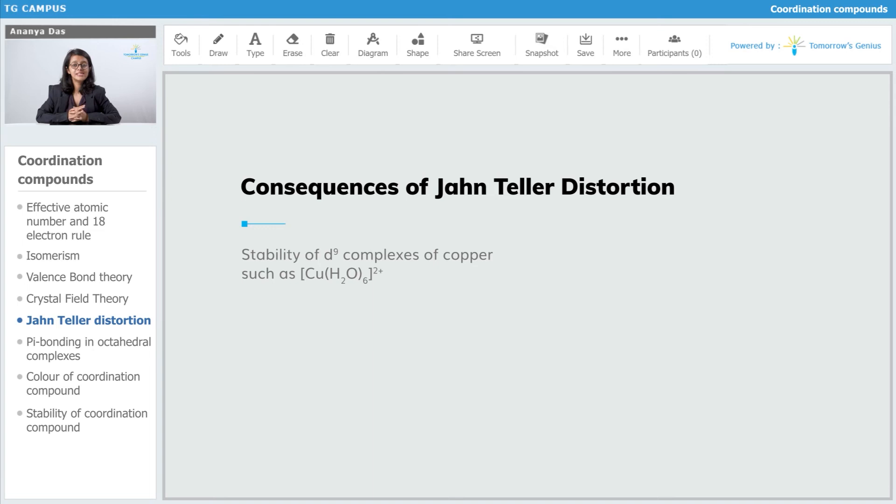Now, Jahn-Teller distortion renders stability to d9 complexes like copper H2O6 2+. In this, Cu is 2+ and we know its configuration will be 3d9. So if it is 3d9, then it is going to undergo Jahn-Teller distortion.